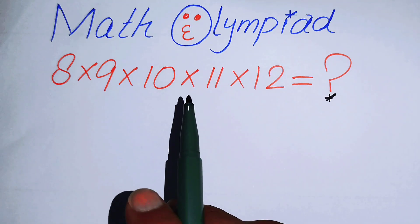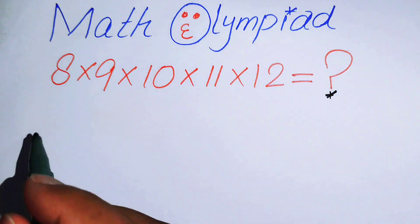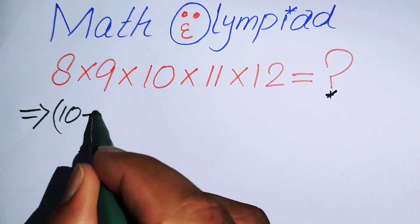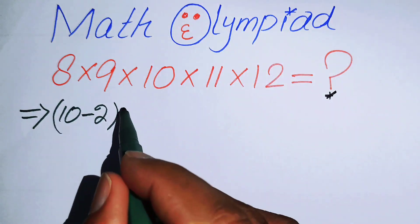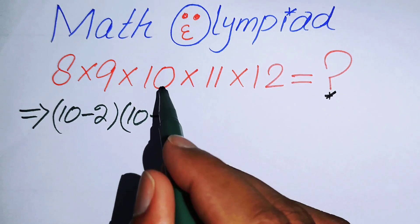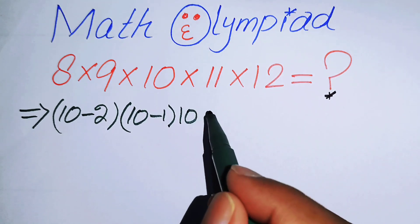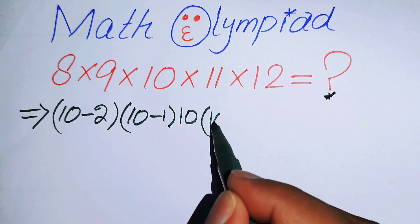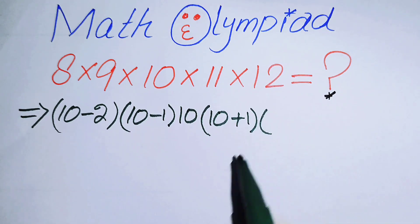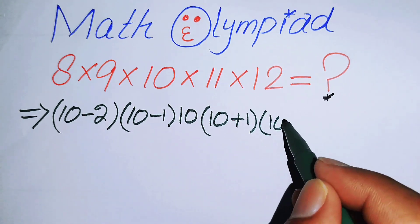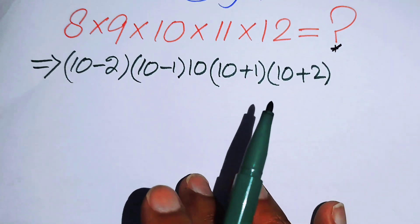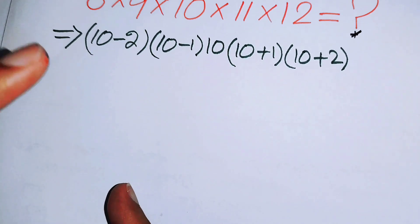First, I can write 8 as (10 minus 2), because 10 minus 2 equals 8. We write 9 as (10 minus 1), keep 10 as it is, write 11 as (10 plus 1), and write 12 as (10 plus 2).